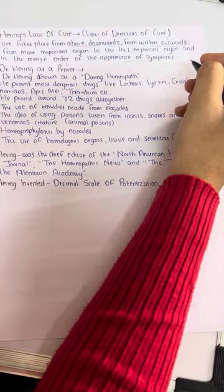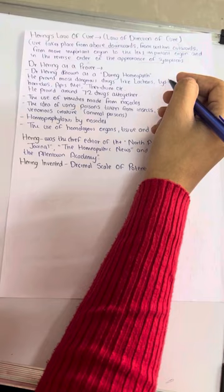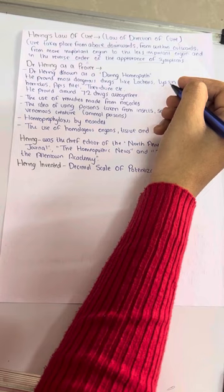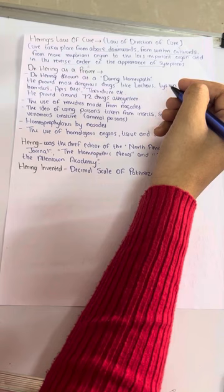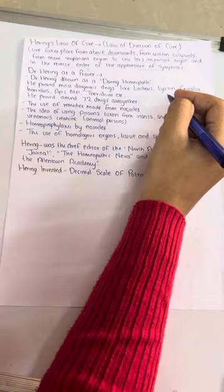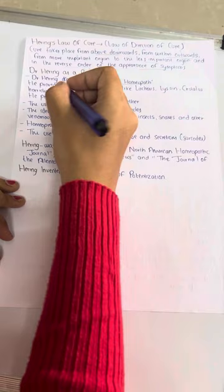Now Dr. Herring, apart from being a doctor, apart from practicing homeopathy, apart from authoring many books, apart from discovering or giving Herring's Law of Cure, he himself was a prover. What do we say? Ideal prover is homeopathic physician himself. So he wrote books, practiced medicine. But what is the another contribution? He was Dr. Herring as a prover. Dr. Herring is known as a daring homeopath. He proved most dangerous drugs.